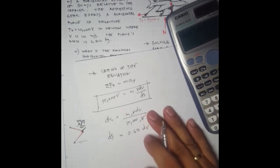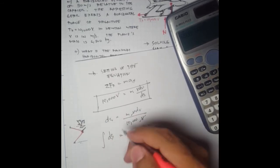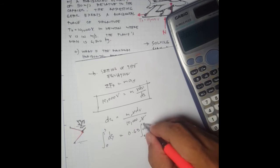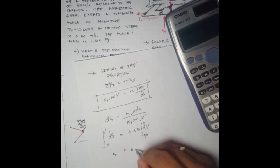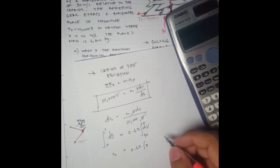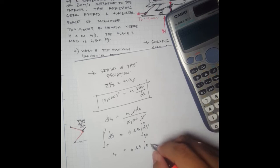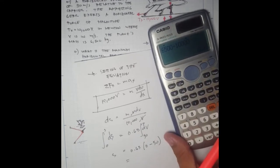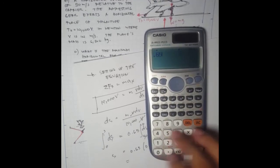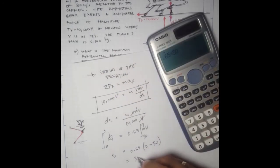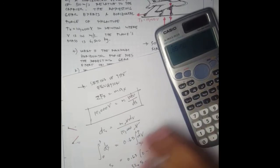Let's integrate from 0 to s, and this one is from 50 to 0. So s equals 0.65 times (0 minus 50). Let's see, 0.65 times 50 equals 32.5. We got 32.5 meters.